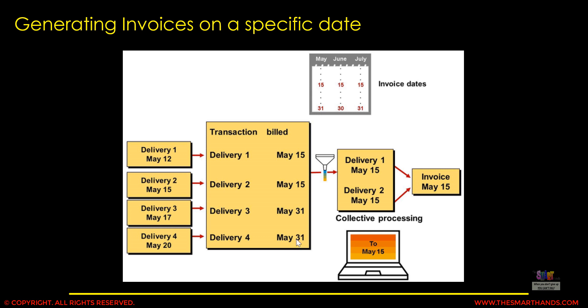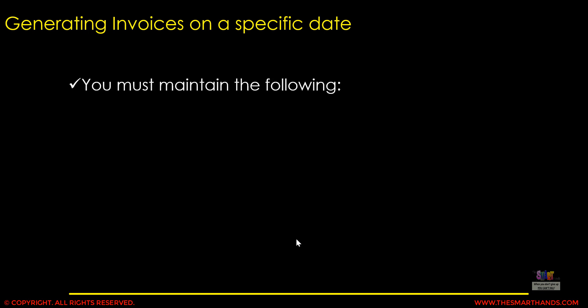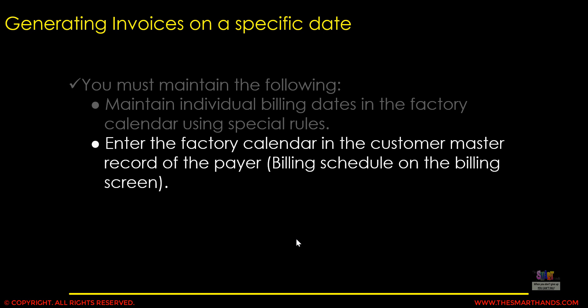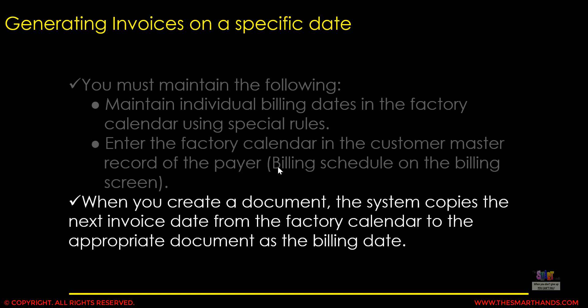This setting is customer-specific — one customer may want something different from another. There are two things to maintain in the system: first, maintain the individual billing dates in the factory calendar using a special rule. I'll create a separate video explaining factory calendar in more detail. Second, enter that factory calendar in the customer master or business partner record. When you create a document, the system copies the next invoice date from the factory calendar as the billing date.